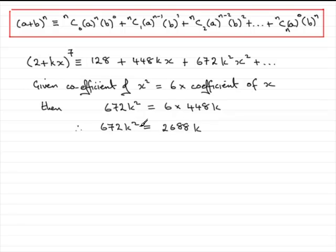And what we've got is a quadratic equation, because we've got a k squared, and like all quadratic equations, it is best to bring everything to one side. So we've got 672k squared minus 2688k equals zero.